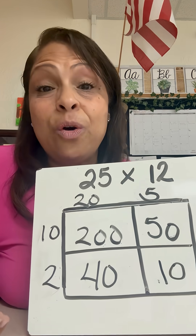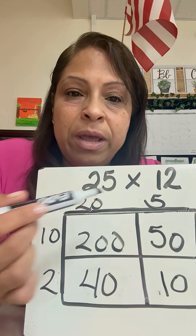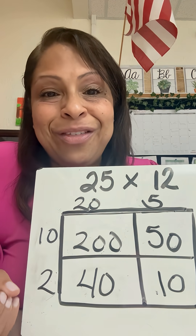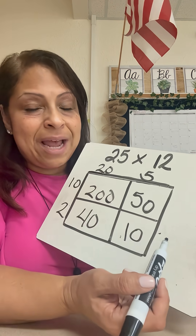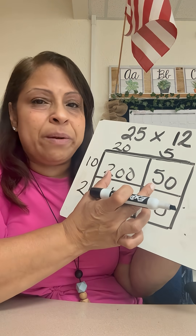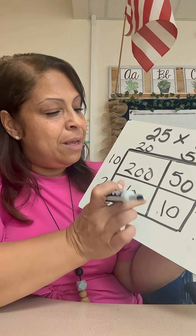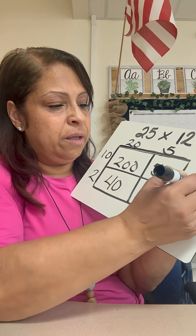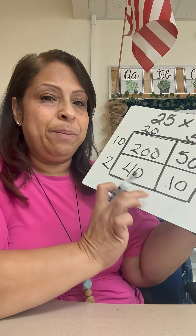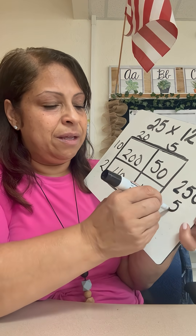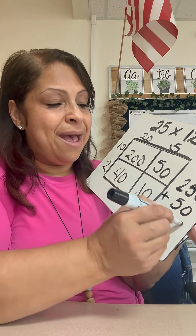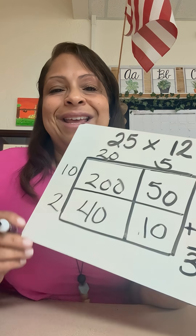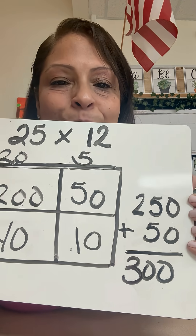We also call this partial products, because we now have all these partial products that we need to add together. Over here on the side I'm going to do that, but I can also combine numbers — so 200 plus 50 is 250, and 40 plus 10 is 50. Now we add those together, and just like that we have our product.